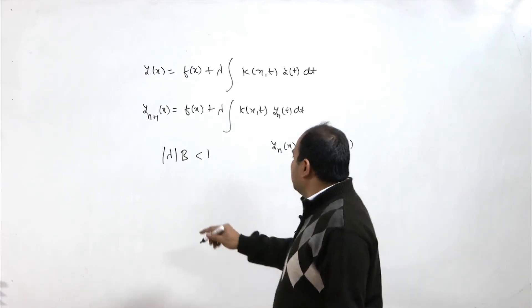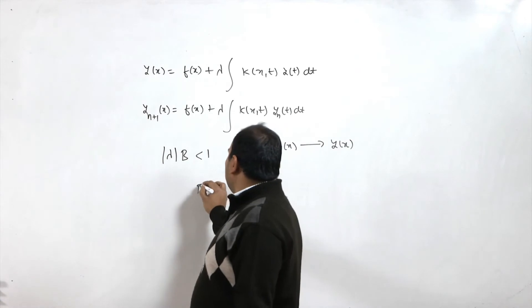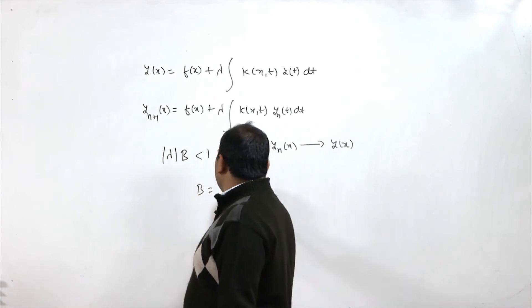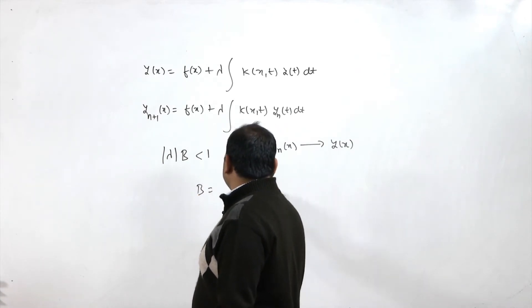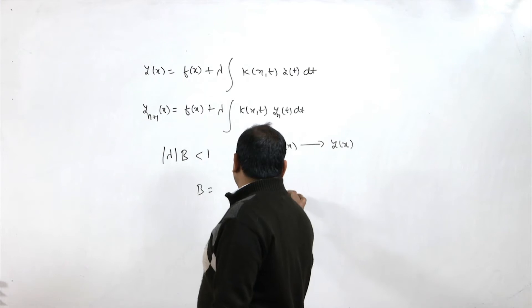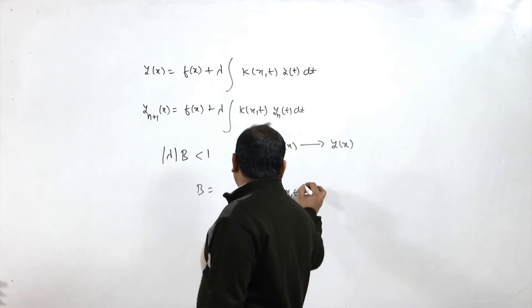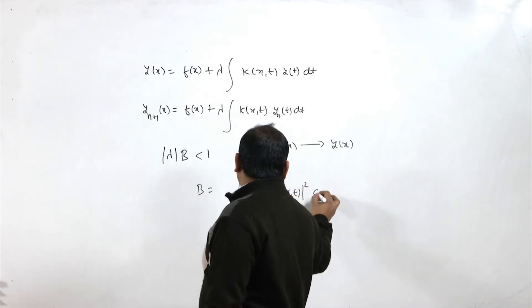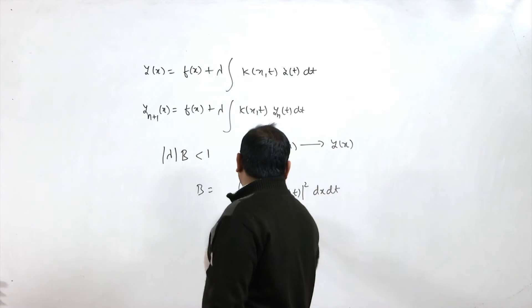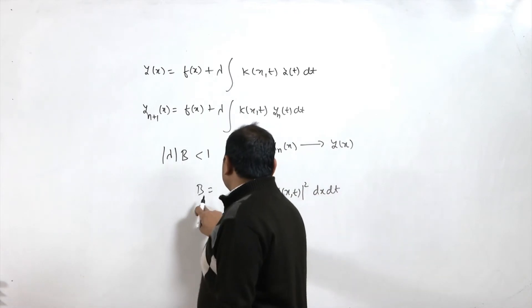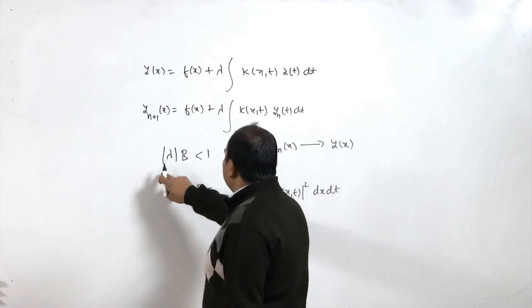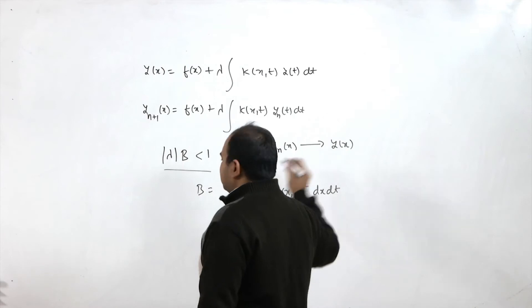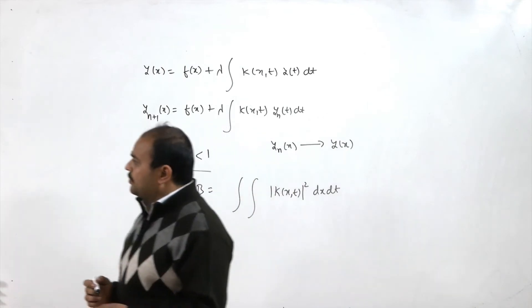This convergence is uniform. Here b is defined as ∫∫|k(x,t)|² dx dt, and if |λb| < 1, convergence is uniform.